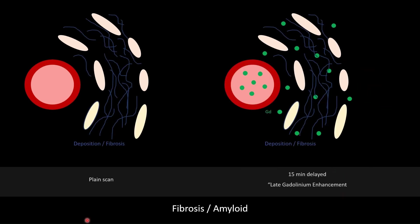In a case of diffuse fibrosis causing expansion of the ECV: when contrast is given, gadolinium deposits in the fibrosis or interstitium, resulting in diffuse or patchy late gadolinium enhancement. If we take T1 mapping values here, T1 will be raised and ECV will also be raised.